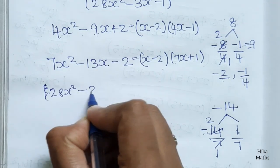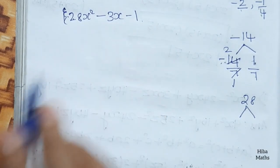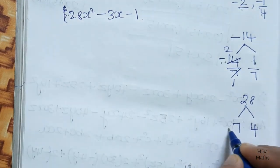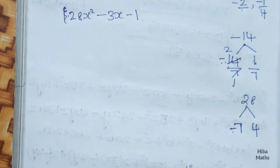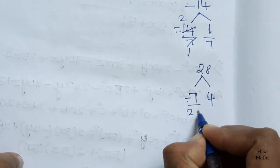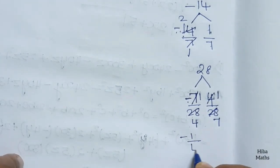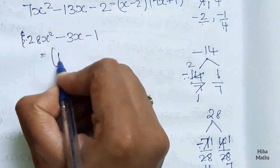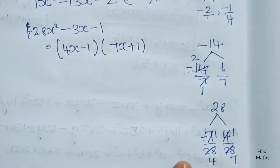For 28x² minus 3x minus 1: multiply 28 times 1 equals 28. We need minus 28 split as minus. The split gives 7 fours are 28 and 4 ones. The roots are minus 1 by 4 and 1 by 7, giving factors (4x minus 1)(7x plus 1).